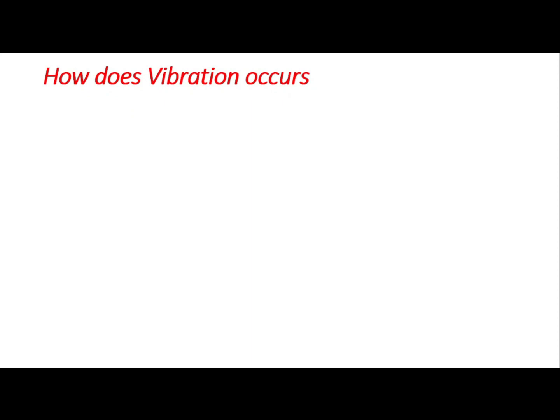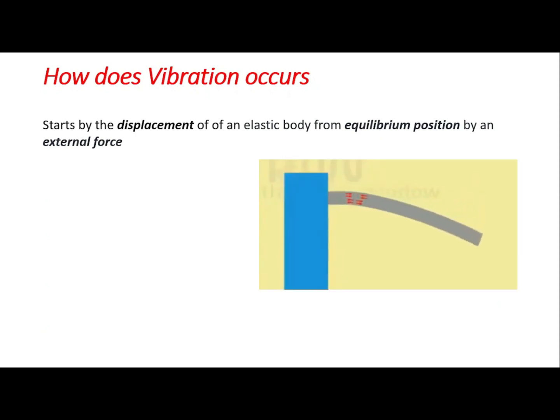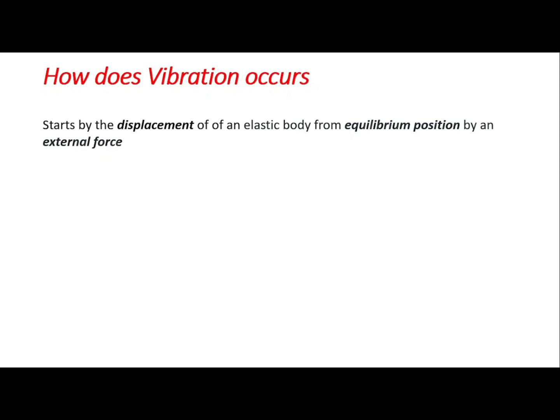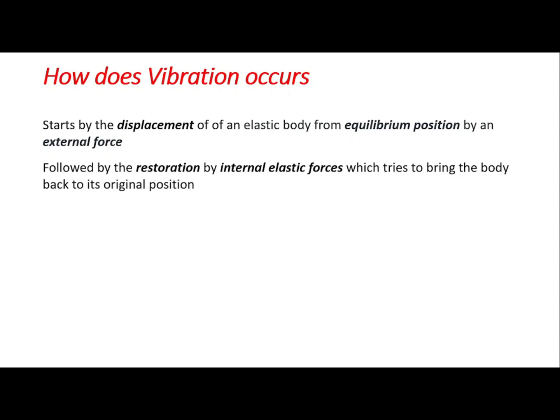How does vibration occur? Vibration begins by the displacement of an elastic body from its equilibrium position by an external force. This is followed by restoration by internal elastic forces which try to bring the body back to its original position.